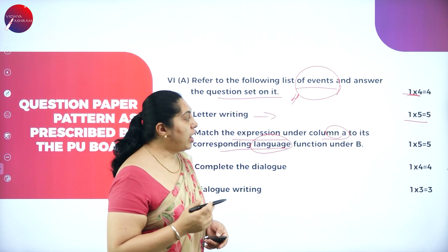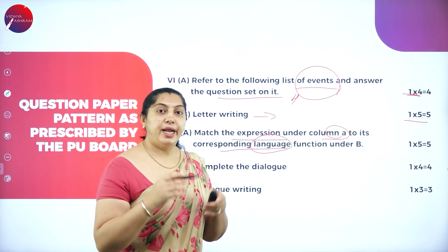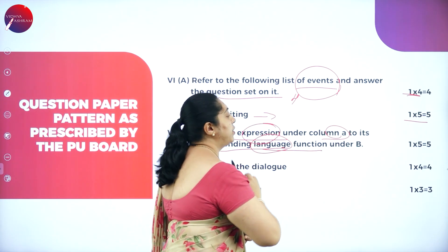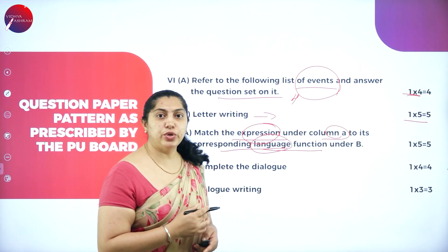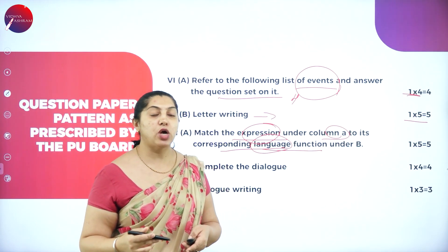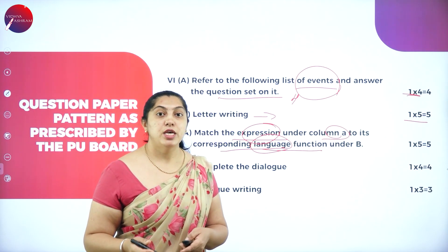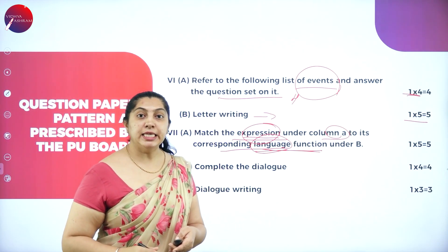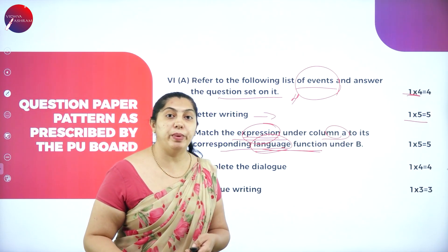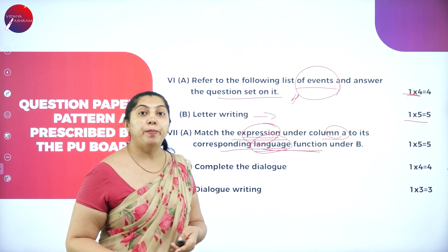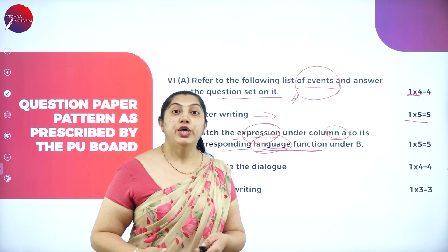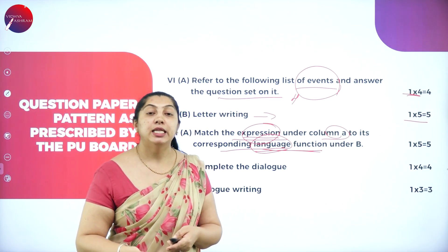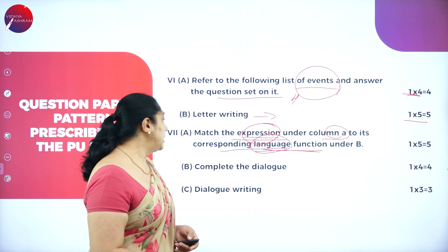The next question is 'Match the Expression under Column A with the Corresponding Language Function' — a match-the-following table with five questions, one mark each. For example, 'You're looking pretty' is the expression, and the language function is 'complimenting.' 'Please can I get a pen?' is a request — that is the language function.